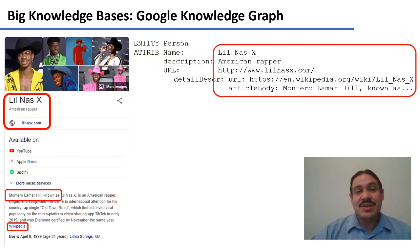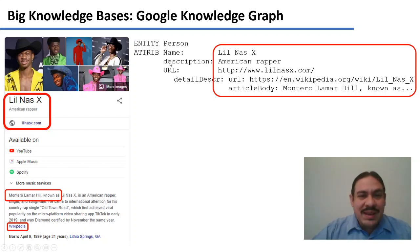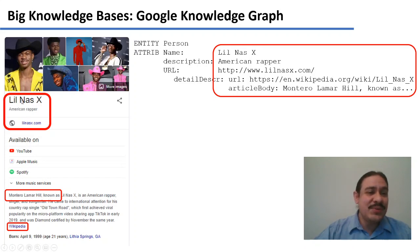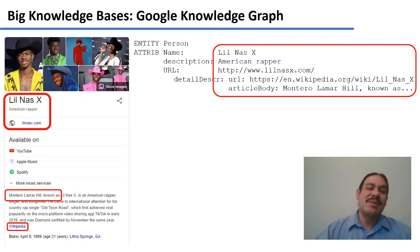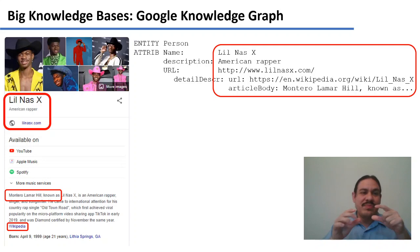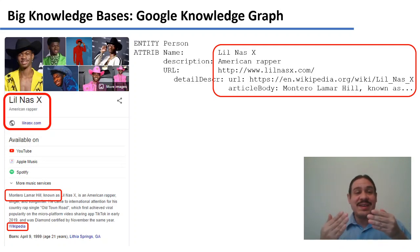A second example of a big knowledge base is the Google Knowledge Graph, which you'll play around with in one of your exercises. The API lets you access attributes such as person, Lil Nas X, description: American rapper. The same information you get from the API is what Google displays in the little sidebars to your searches. This is built mostly by analyzing Wikipedia text, so many of the answers point to Wikipedia. It extracts proper names, finds the best description, and stores it in a structure with entities like person and a series of attributes.